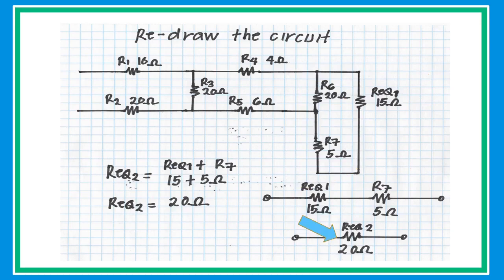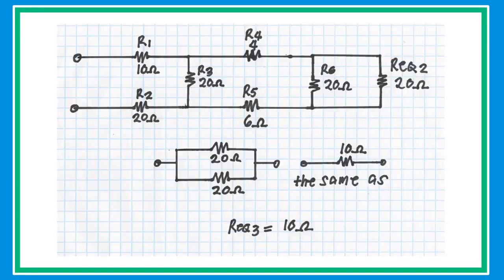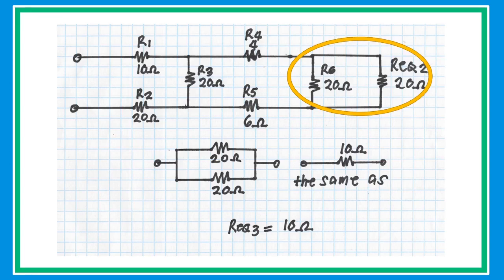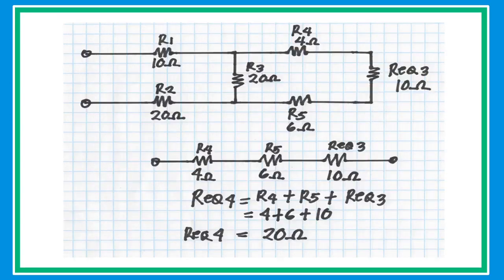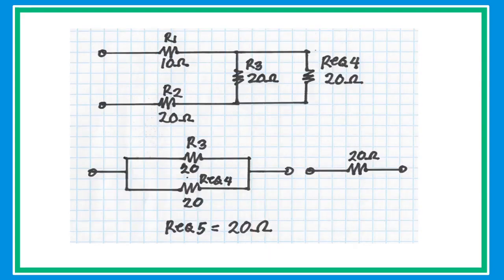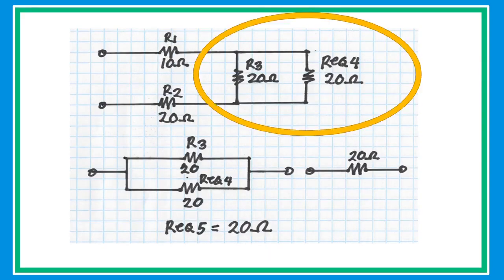After redrawing, R equivalent and R7 are in series — add them to get 20 ohms — but you cannot yet add R6 because there is branching at R5. After collapsing and redrawing again, R6 (20 ohms) and R equivalent (20 ohms) are in parallel with the same value, so get half to get 10 ohms. Collapse and redraw once more. Now R4, R5, and R equivalent are in series — add the three resistors to get an equivalent resistance of 20 ohms.